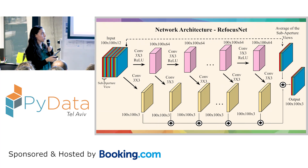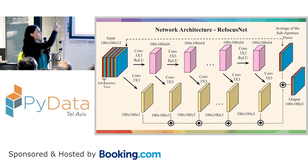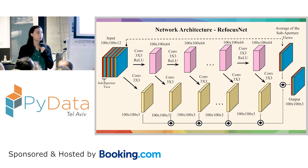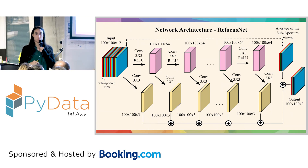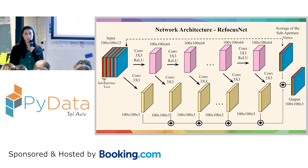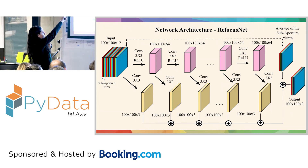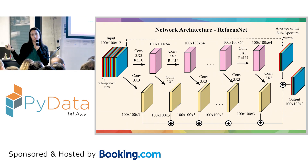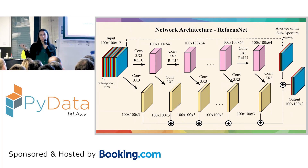This is the network architecture. It's a fully convolutional network with two trajectories. The first trajectory goes through convolutions of 3 by 3 and ReLU, and each one of those outputs goes through another convolution of 3 by 3. Those residual images are summed into one sum of residuals. To this we add the average of the sub-aperture views, which preserves the areas of the image we want to preserve, while the sum of residuals corrects the artifacts.